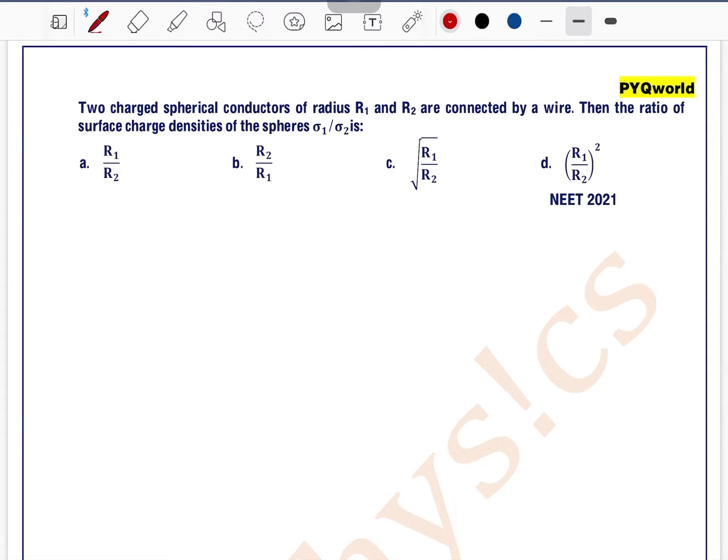Two charged spherical conductors of radius r1 and r2 are connected by wire. Then the ratio of surface charge densities of the spheres is... Now see we have two charged spheres.